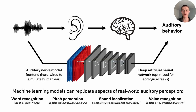Recently, machine learning models have been shown to replicate many aspects of auditory perception. These models often consist of a hard-wired auditory nerve model front-end, which feeds into a deep neural network whose weights are optimized for an ecological hearing task. The underlying idea is that human hearing has been optimized over evolution and development to solve important tasks. Machine systems, if optimized under similar constraints, might arrive at similar solutions.